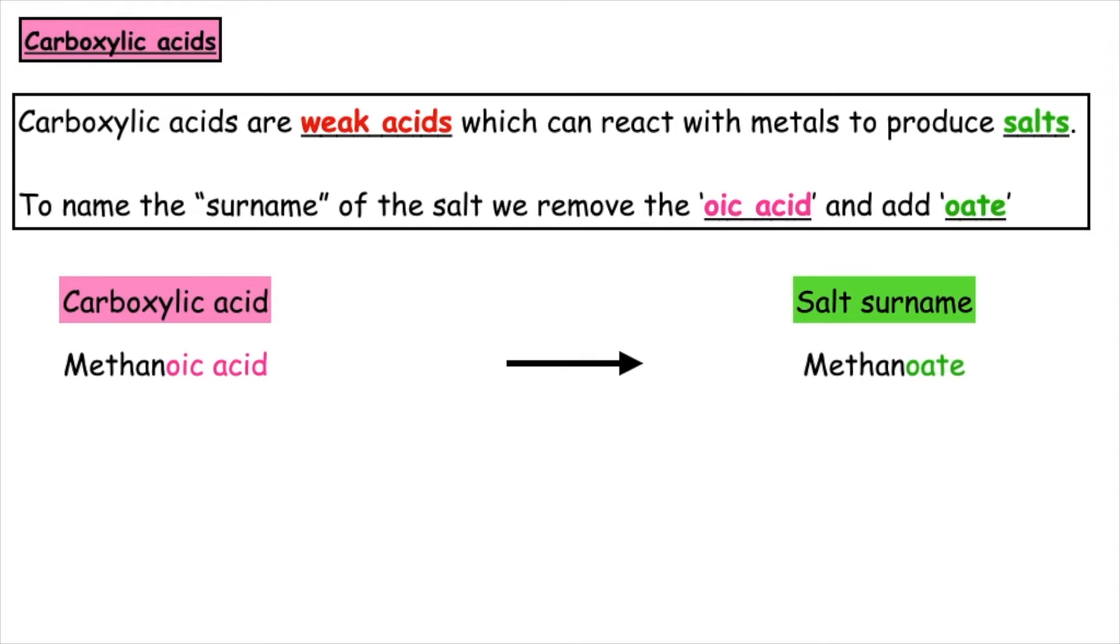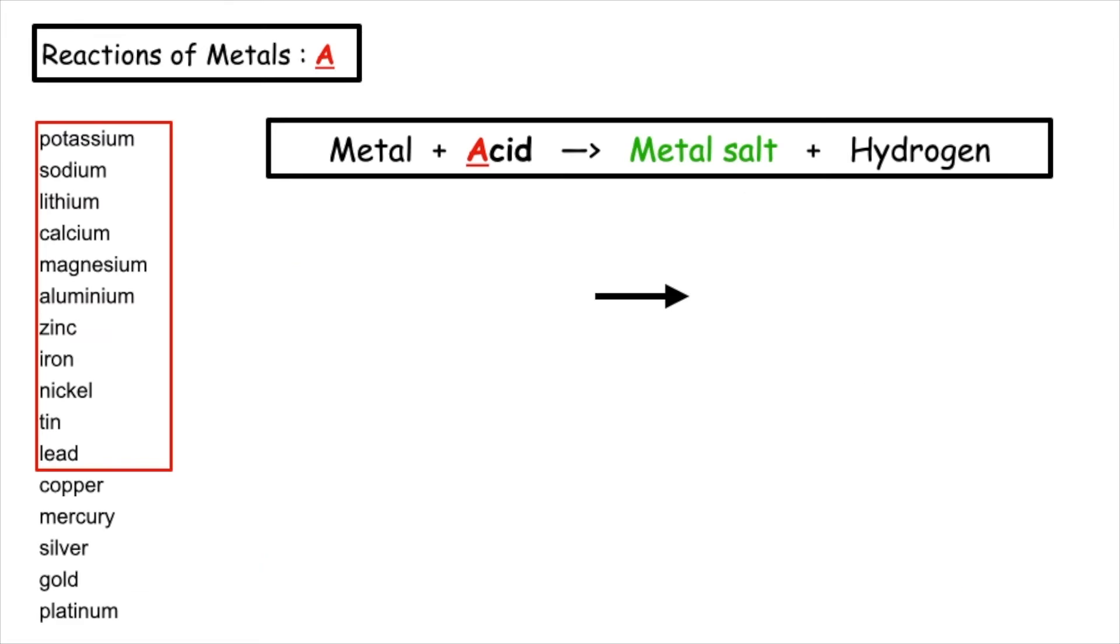If we had ethanoic acid, the surname of the salt would be ethanoate. And if we had propanoic acid, the surname of the salt would be propanoate.